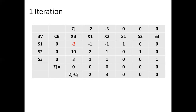Since all ZJ minus CJ values are greater than or equal to 0, the solution is optimal. However, in the XB column we have a negative value. So the solution is optimal but not feasible. Therefore, we can improve the solution further in the next iteration.